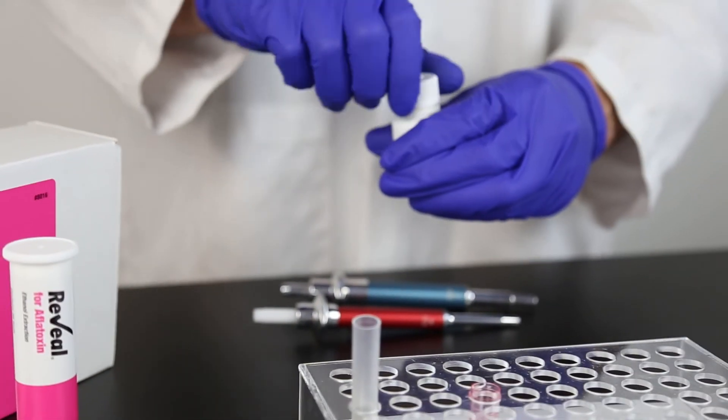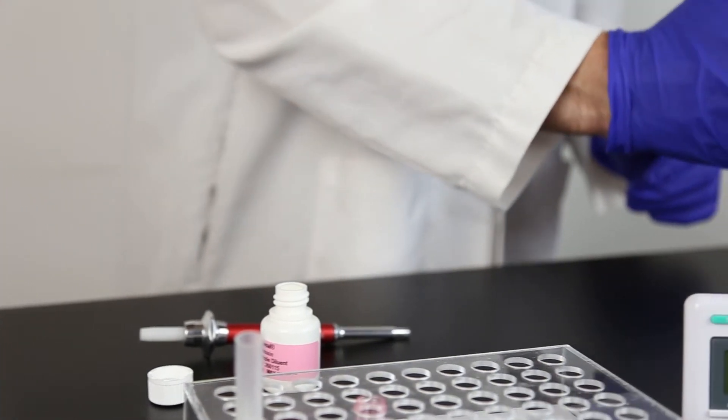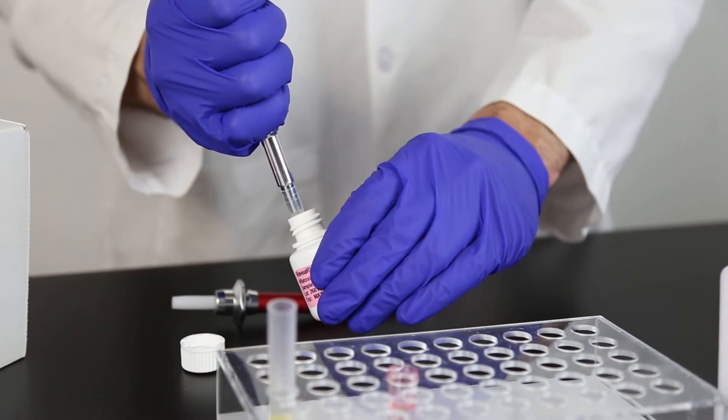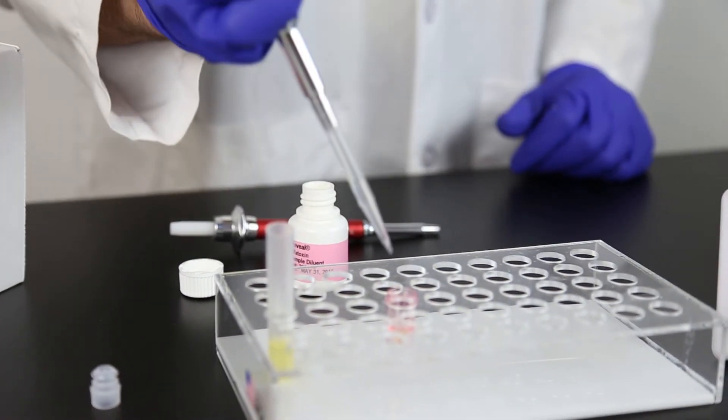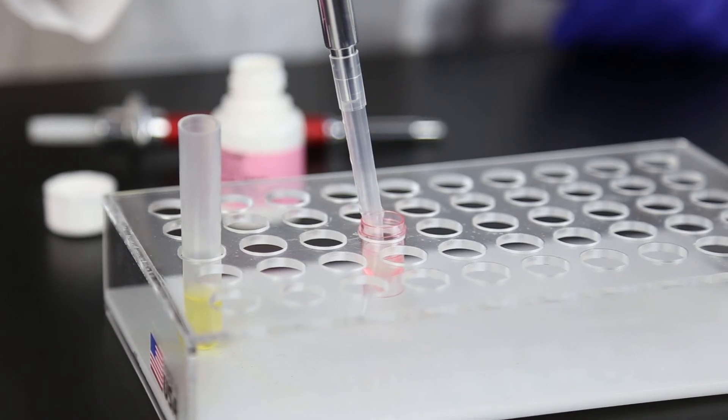Using a new pipette tip, add 500 microliters sample diluent to the sample cup. Mix by pipetting up and down five times. It is important to mix thoroughly.